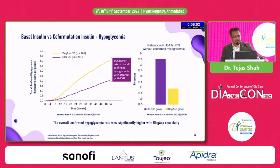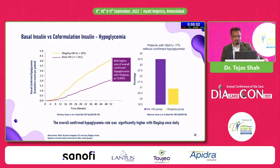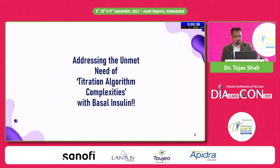A head-to-head comparison of basal insulin versus IDegAsp — comparing glargine 100 versus IDegAsp — showed similar efficacy, with IDegAsp being non-inferior to glargine. However, in terms of hypoglycemia, there was an 86% higher overall rate of confirmed hypoglycemia with IDegAsp as compared to glargine 100.